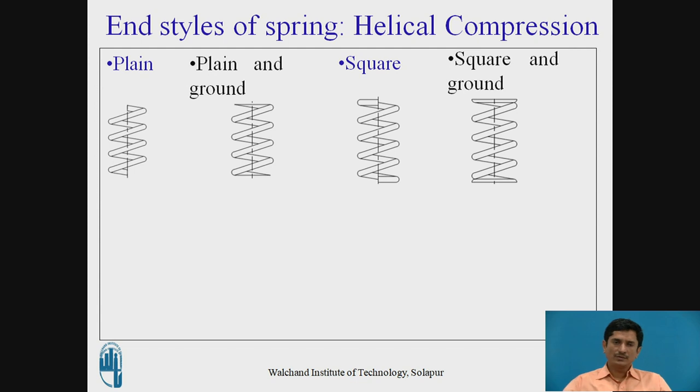We can see that for the first one, the ends are sharp. Those are ground and it is now flat. Third is the squared end where this section of the wire is perpendicular to the spring axis, and third is the squared end ground.